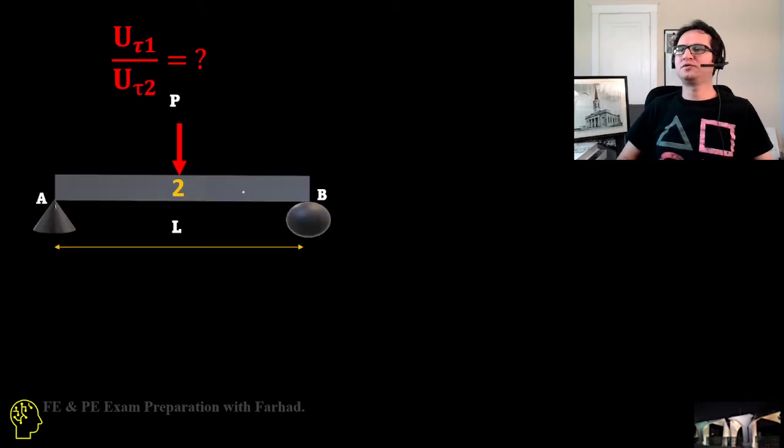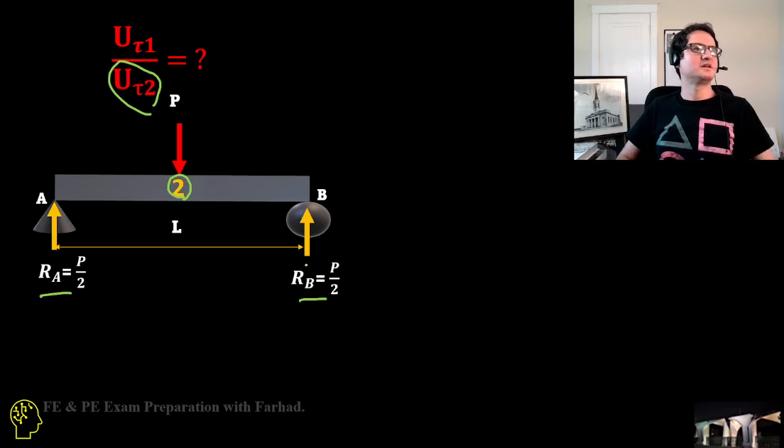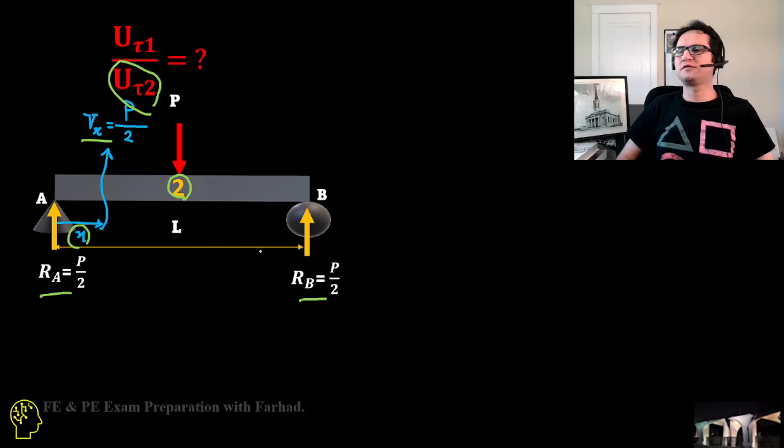For the second condition, a simply supported beam with concentrated load applied at its center, we want to calculate U_τ2. Due to symmetry, each support carries half of P. If you cut the section through by a distance of x, it gives you V_x equal to P/2.